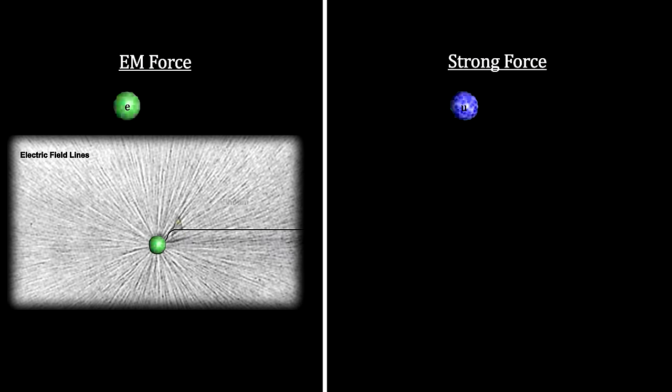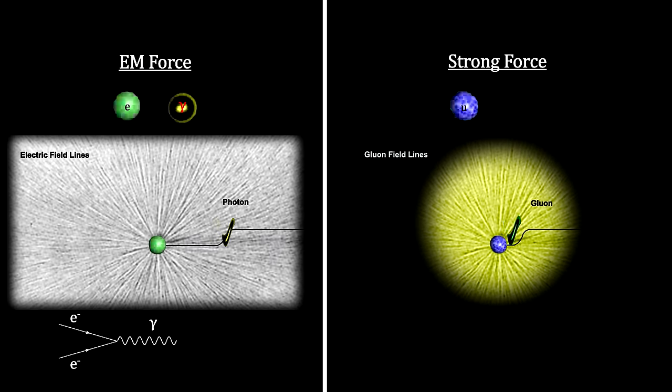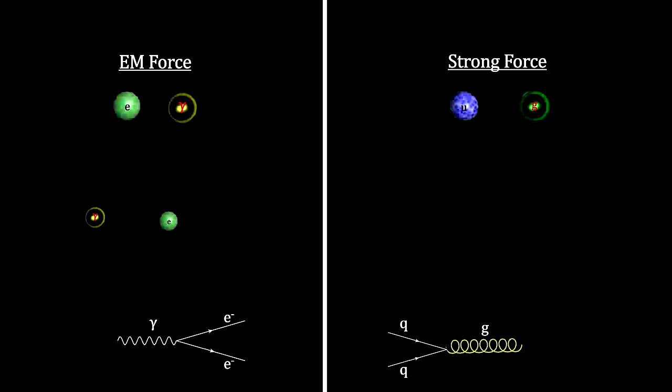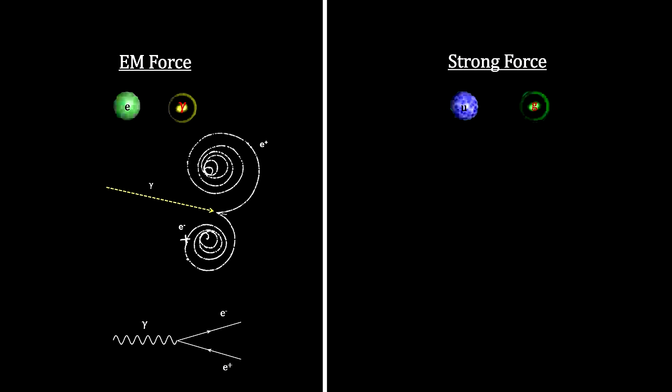We have seen that an accelerating electron creates a vibrating ripple in its electromagnetic field called a photon. Similarly, an accelerating quark creates a vibrating ripple in its gluon field called a gluon. And like photons, gluons are massless, spin-one particles, making them bosons. And where photons can accelerate electrons, gluons can accelerate quarks. And where an energetic photon can create an electron-anti-electron or positron pair, an energetic gluon can create a quark-anti-quark pair.